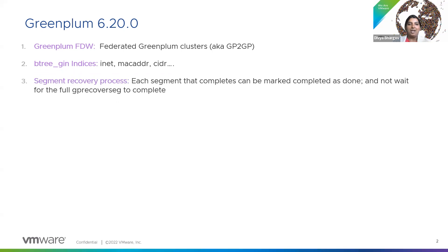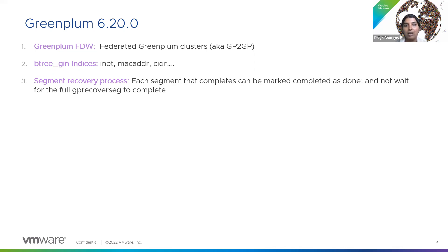Number three: segment recovery process. We have had several improvements in the GreenPlum segment recovery process. At this point, we can have much faster and reliable recovering because individual mirrors can be brought up without waiting for all the mirrors to come up. This is way better than the full recover seg option for incremental recoveries.